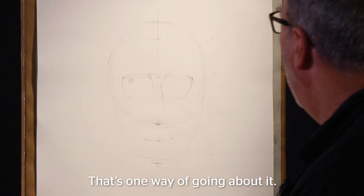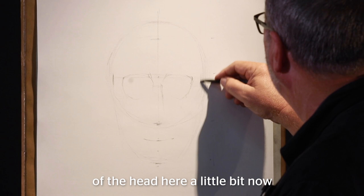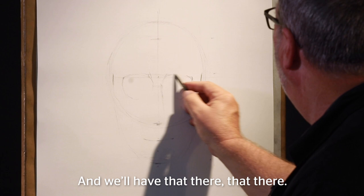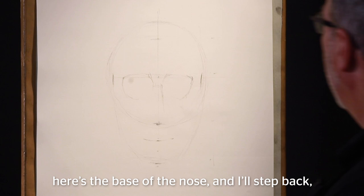And I think I'm going to bring in the sides of the head here a little bit now. We have in from the spherical shape. And we'll have that there, that there. Here's our keystone shape. Here's the base of the nose. And I'll step back, make sure things aren't too crooked or getting wonky on us.